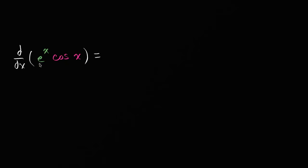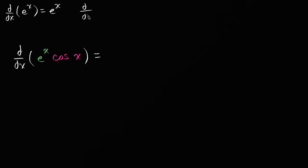When you look at this, you might say: I know how to find the derivative of e to the x — that's just e to the x. And the derivative with respect to x of cosine of x is equal to negative sine of x. But how do we find the derivative of their product? Well, as you can imagine, this might involve the product rule.